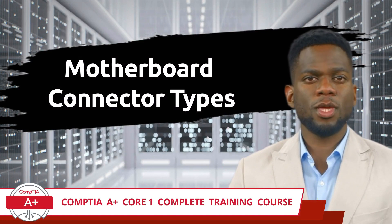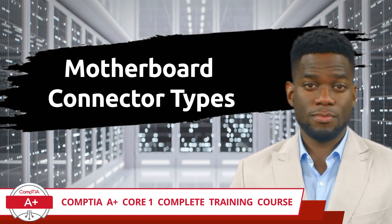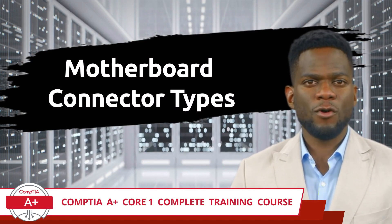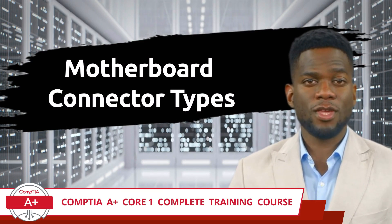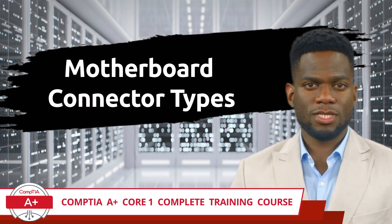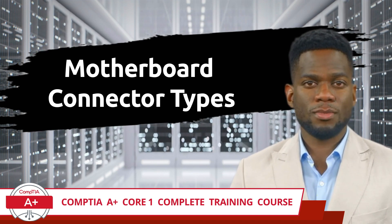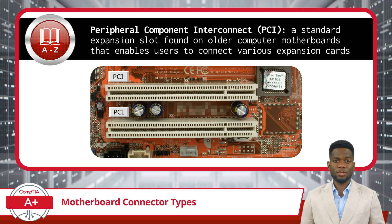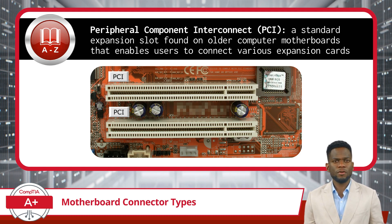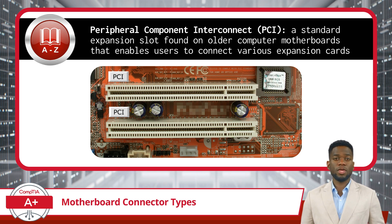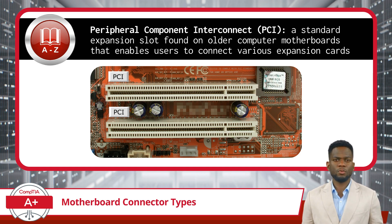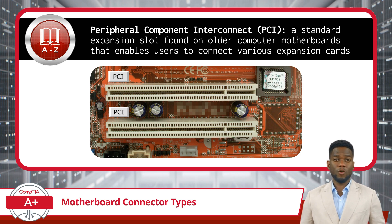CompTIA A Plus Core 1 Complete Training Course, Exam Objective 3.4: Given a scenario, install and configure motherboards, central processing units, and add-on cards. This video will have us exploring the various types of connectors found on motherboards. Some of these we have covered earlier in this course, but there will be a few new details and a few new connector types included as well, so it is best to pay attention to avoid missing anything.